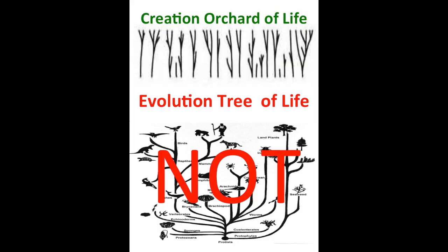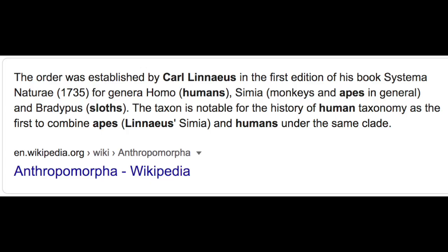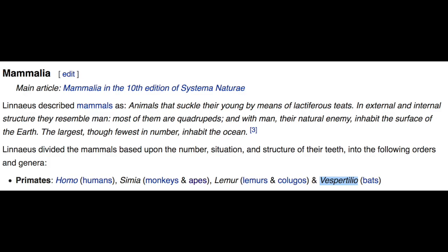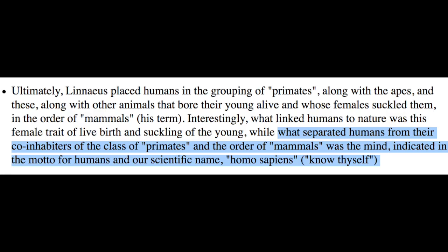He classified mankind, humans, as Homo sapiens and placed us in the genus Homo in 1758 as the only member of that species, a totally separate kind, because the Latin noun Homo means human being. However, he had to place humans somewhere. So he placed them into the class Quadrupeds, along with apes and sloth, and in 1740, Linnaeus added anteaters to this group. What made Linnaeus link humans to nature was only one thing, and that was the female trait of living birth and the suckling of the young. While what separates humans from their co-inhabitants of the class of primate and the order of mammals was the soul and the mind, indicated in the motto for humans and the specific name he gave them, Homo sapiens, which means to know thyself, in his third edition.